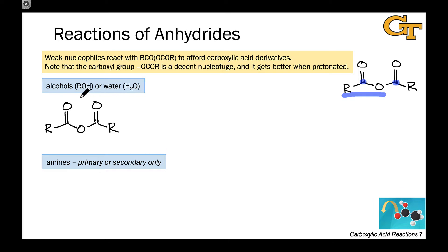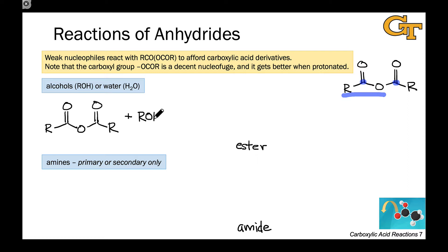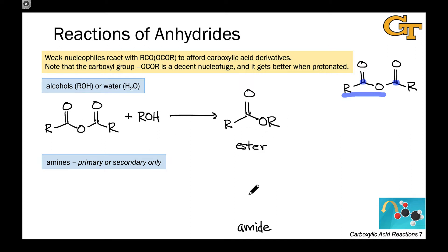The punchline is we can get from the anhydride to an ester product—this involves treatment with an alcohol, as we'll see in a second—or an amide. We can't get up to an acid chloride because the acid chloride is more reactive than an anhydride; this would be thermodynamically uphill. If we treat an anhydride with an alcohol, the product we end up with is an ester, where the H in ROH has been replaced with an acyl group. This corresponds to acylation of an alcohol with an anhydride.